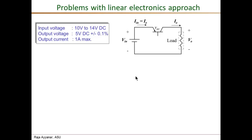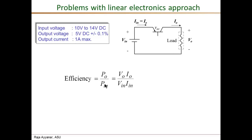If it has so many advantages, then why don't we just use linear regulators? Obviously, it has some major disadvantages. Let's look at the efficiency of this power supply. Efficiency is the ratio of output power PO to input power PIN: VO times IO divided by VIN times IIN. Since the input source, the pass transistor, and the load are all in series, the input current is the same as the load current.